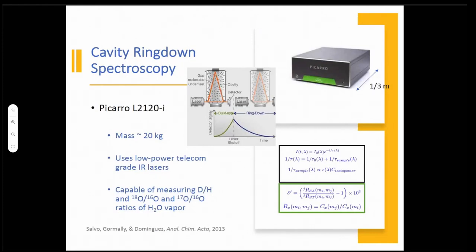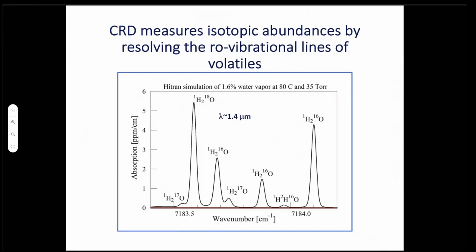In the last decade or so, cavity-ringdown spectroscopy of water vapor and other volatiles has become an instrument that, in many ways, either matches or surpasses the resolution of traditional isotope ratio mass spectrometry. That's the focus of our development work that we have started to pursue. Cavity-ringdown spectroscopy, by resolving the row vibrational lines associated with different isotopically substituted molecules, allows you to get high-precision measurements of the relative abundances of these isotopes.